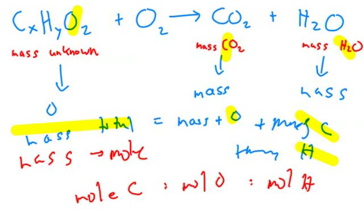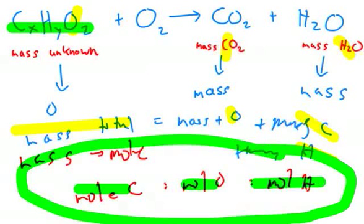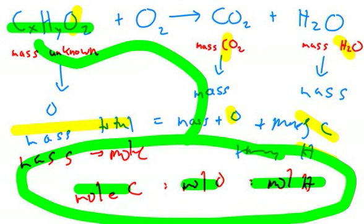Once you have these three moles—moles C, moles O, and moles H—you can find a mole ratio, and that'll let you find the X, Y, and Z in the unknown. It's just like an empirical formula problem. You have the moles of each of those compounds. You can convert those moles to a mole ratio of the unknown.